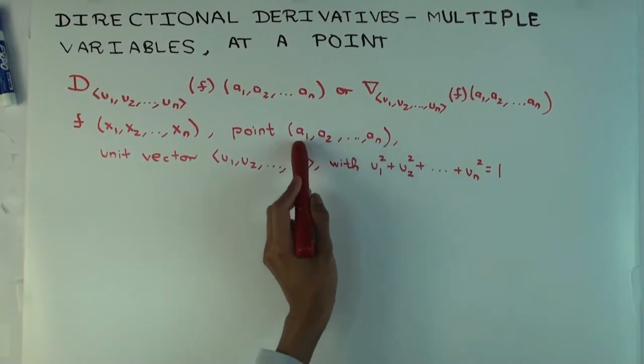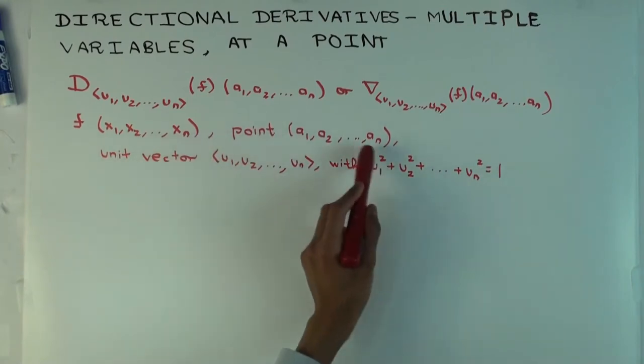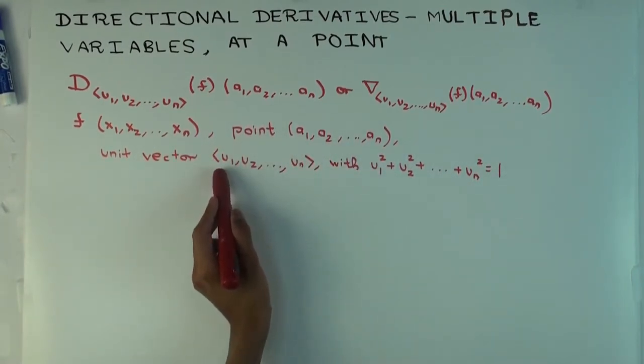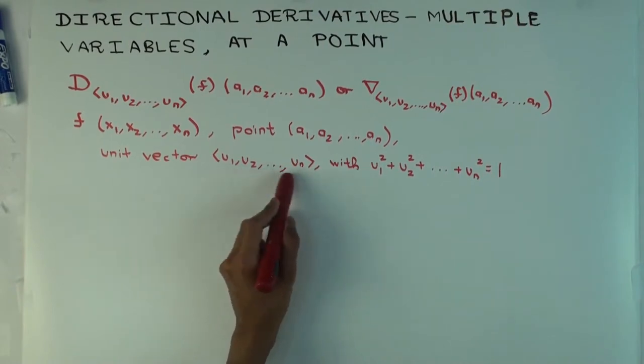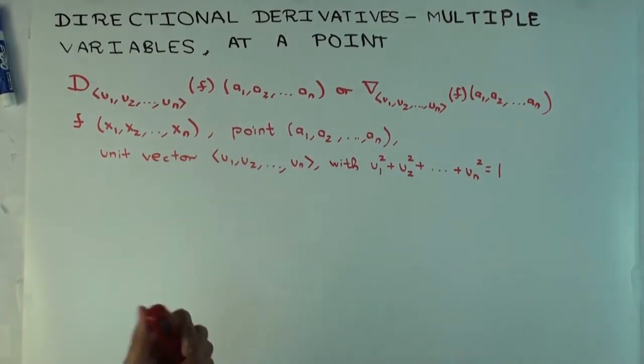This just means x₁ equals a₁, x₂ equals a₂, so until xₙ, these are actual numerical values. And there's a unit vector given to us, which is again given actual numerical values for these things, such that the sum of the squares is 1. The sum of the squares being 1 just means it's a unit vector.